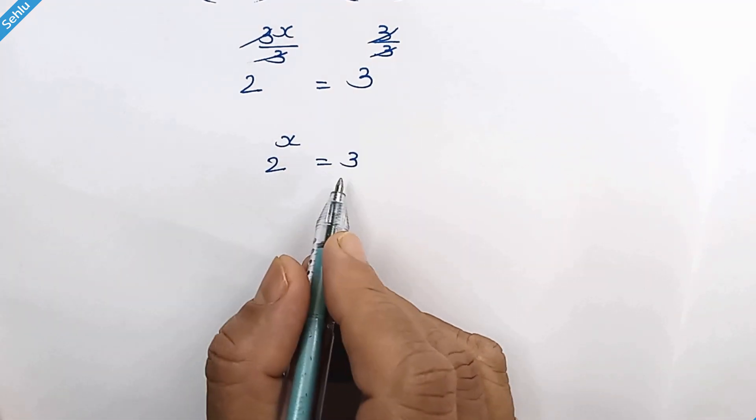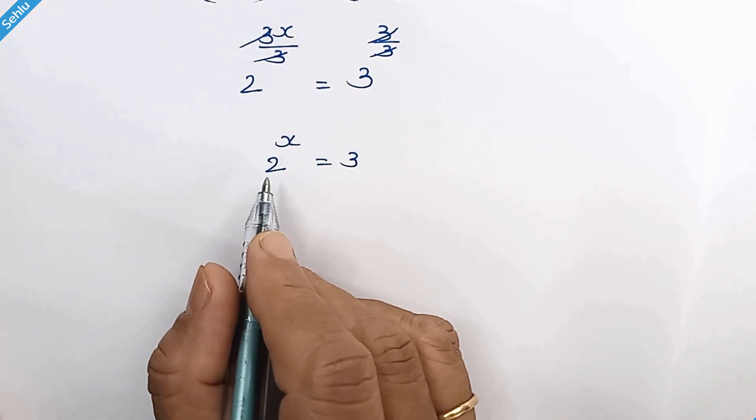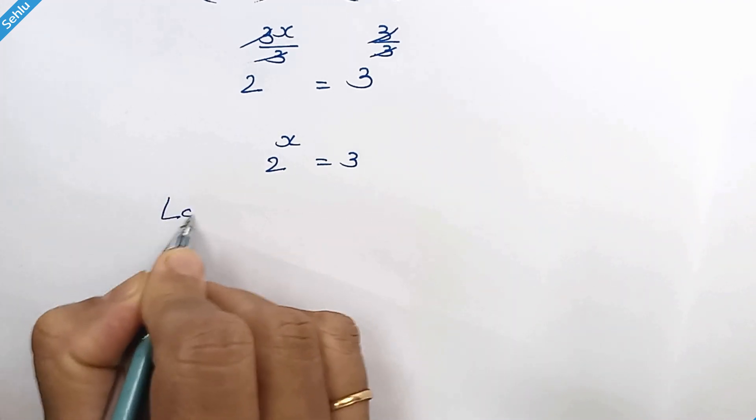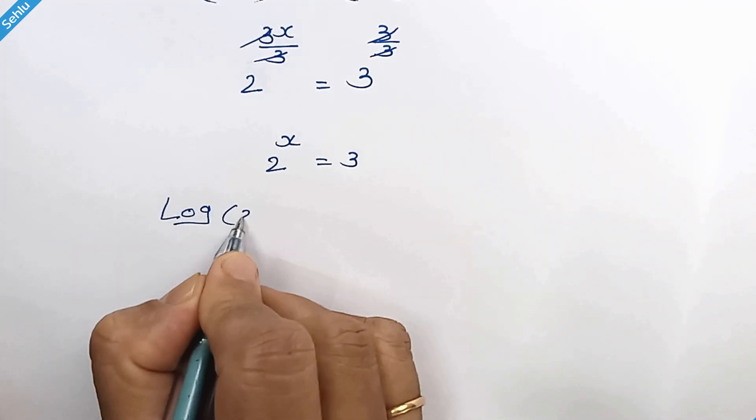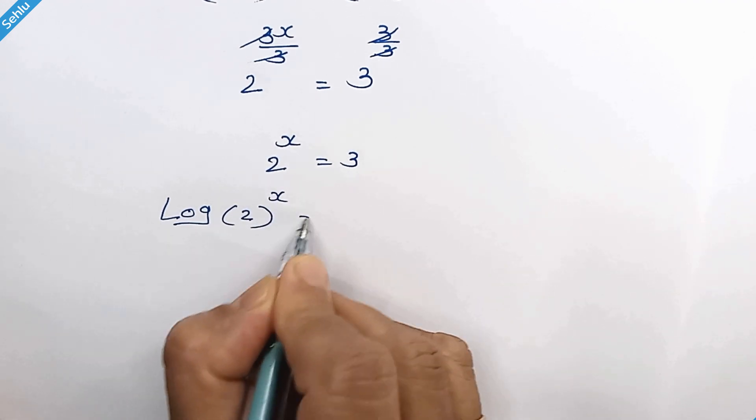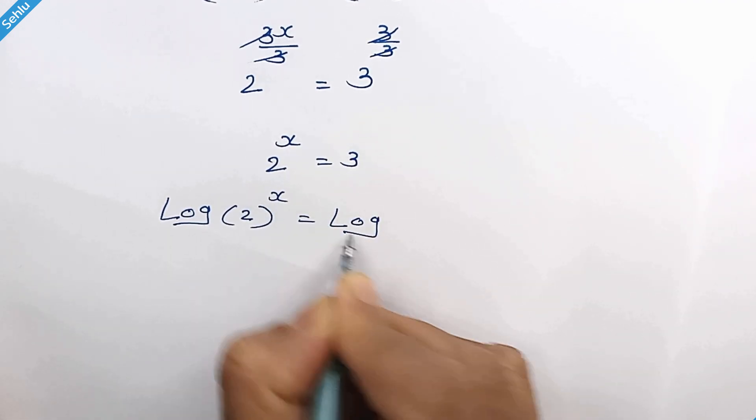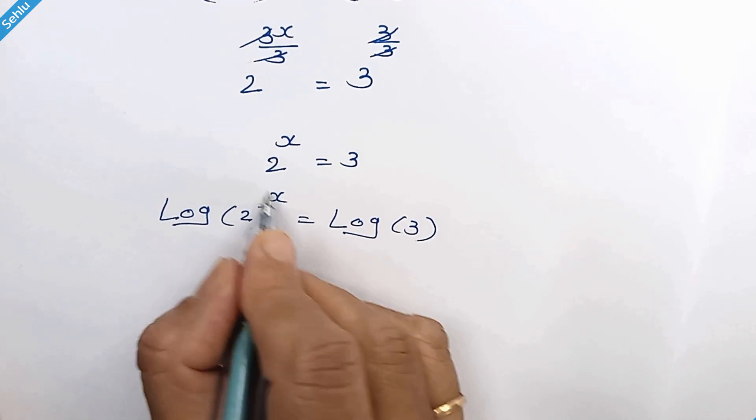Now the bases are different both sides, so we should take a log. Log of 2 to the power x, this x can be a factor.